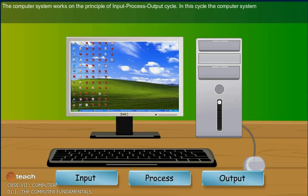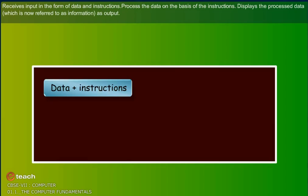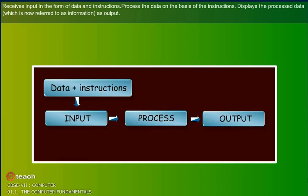In this cycle, the computer system receives input in the form of data and instructions, processes the data on the basis of the instructions, and displays the processed data which is now referred to as information as output.